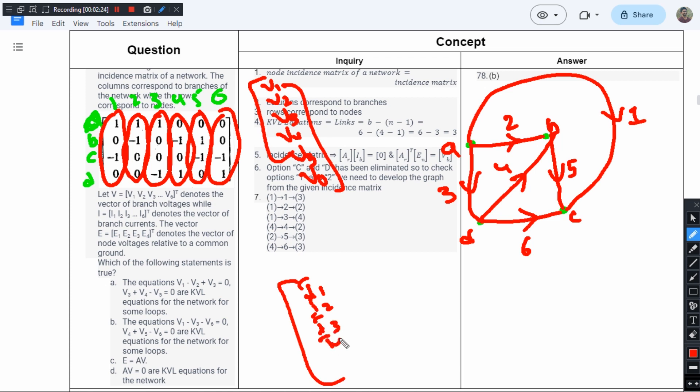And E denotes the vector of node voltages. We have four nodes, so we'll have four voltages: E1, E2, E3, and E4, denoting voltages relative to common ground. Which of the following statements is true? We have been given certain equations and we have to find them.